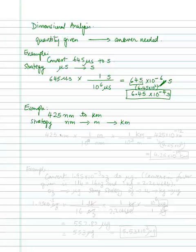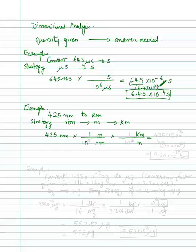So you set up your units again — start with nanometers, because that's the quantity given. Multiply, convert all arrows to multiplication signs, draw the line. You're converting nanometers to meters, so meters goes on top and nanometers goes on the bottom. There is a direct conversion between nanometers and meters. Then multiply again and convert meters to kilometers, so meters goes on the bottom and kilometers goes on top. Put in the numbers: 425 nanometers; in one meter there are ten to the power of nine nanometers, and in one kilometer there are ten to the power of three meters.